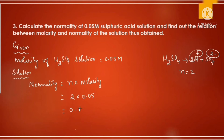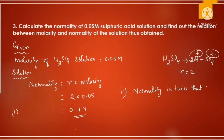So normality = 2 × 0.05 = 0.1 N. Comparing the two values, molarity is 0.05 and normality is 0.1, which shows that normality is twice that of molarity for sulfuric acid.